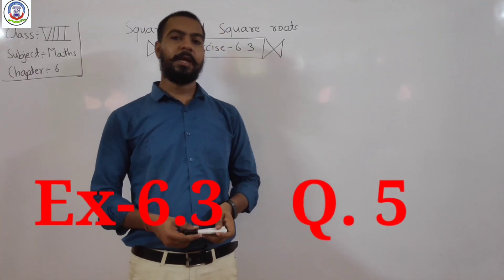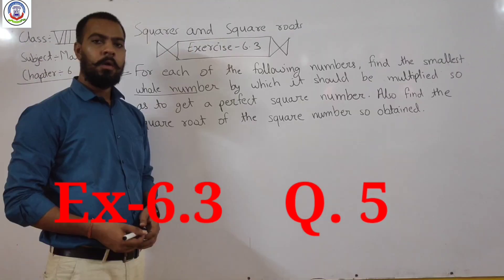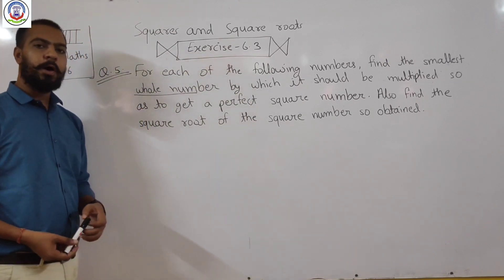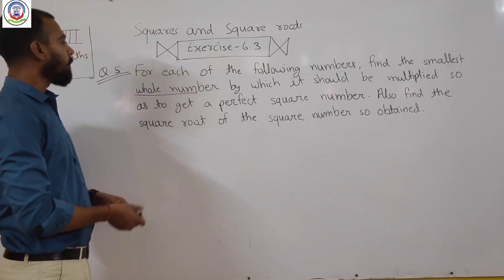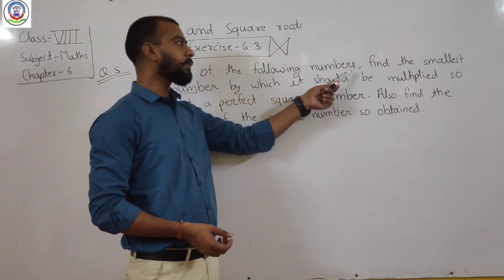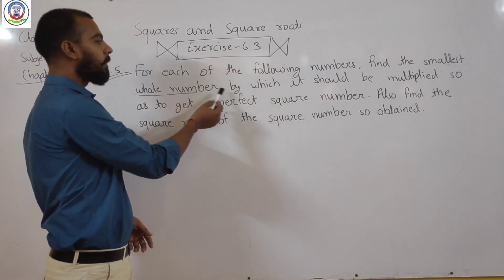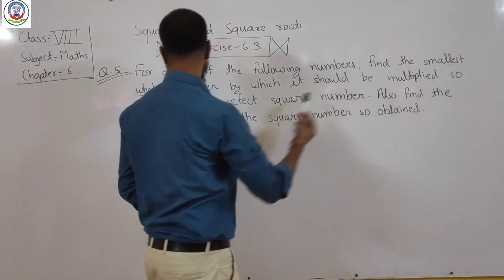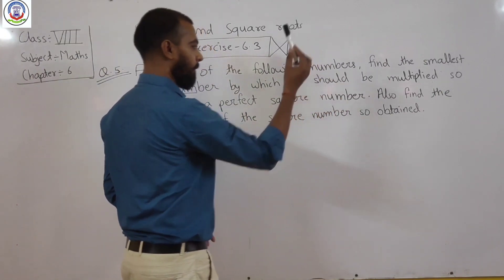In today's lecture, we will discuss Question Number 5. In this question, we have given that for each of the following numbers, find the smallest whole number by which it should be multiplied so as to get a perfect square number.